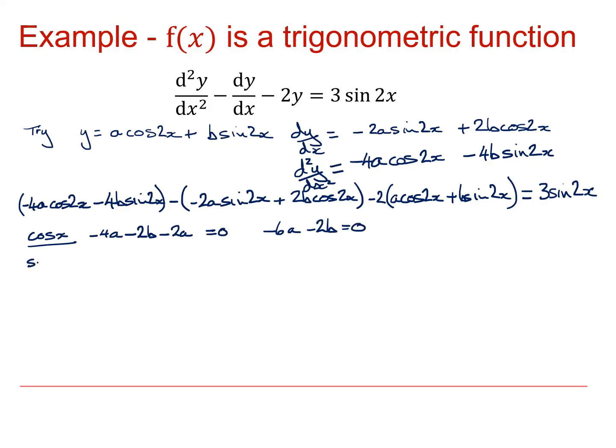If I look at sin x, from the first bracket I'm going to get a minus 4b. The second bracket, I'm going to get a plus 2a. And from the final bracket, I'm going to get a minus 2b. And that's equal to 3. So I'm going to get 2a minus 6b is equal to 3.